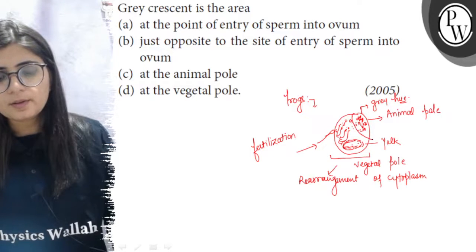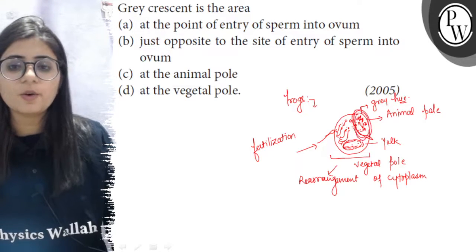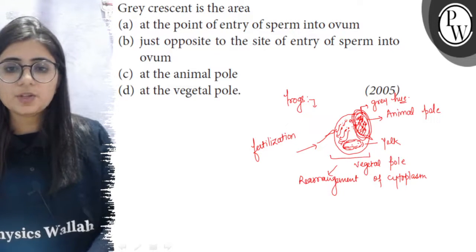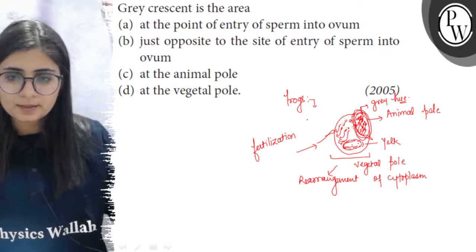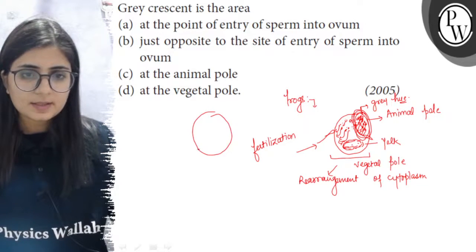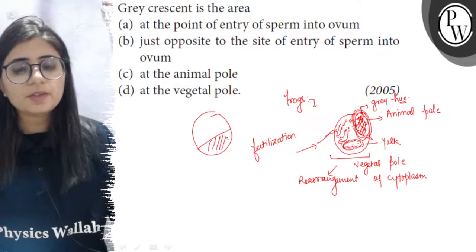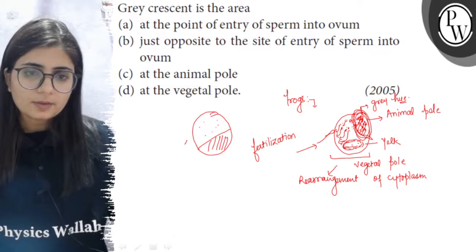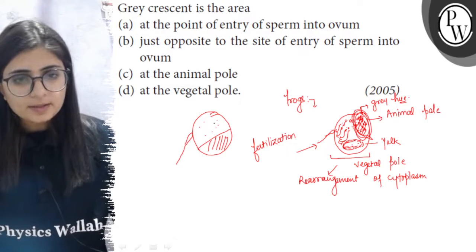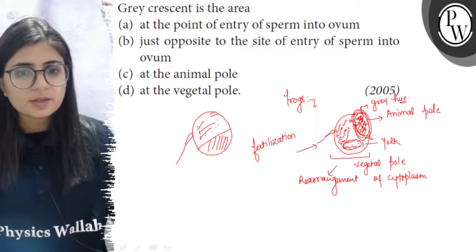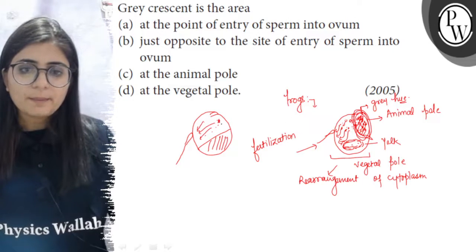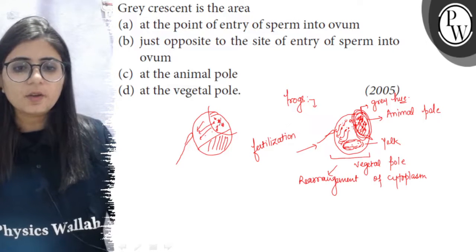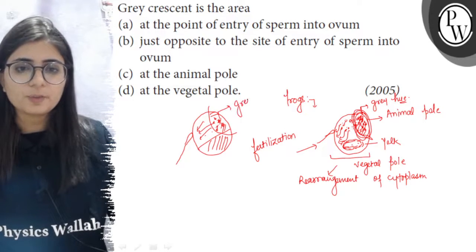This creates a structure with yellow coloration at the pole opposite to the sperm entry point. So, the vegetal pole has the yolk, the cytoplasm has melanin, and at the point where the sperm is entering, the cytoplasm moves toward that entry while the melanin residues remain at the opposite pole.